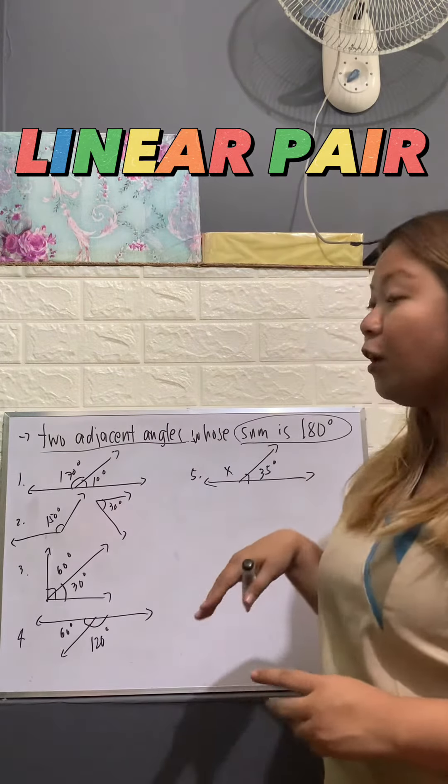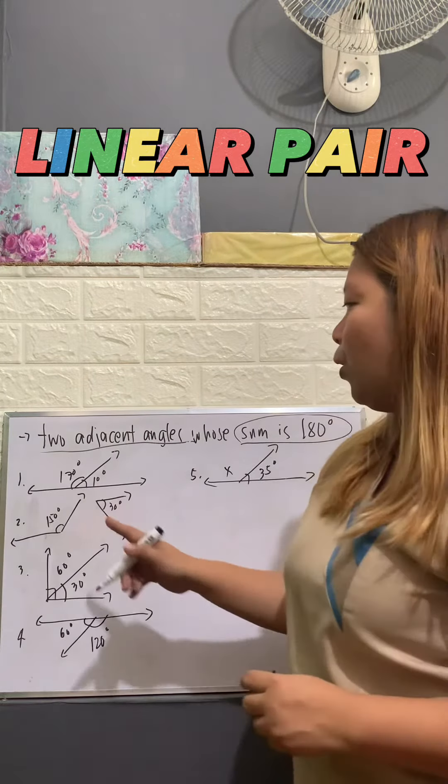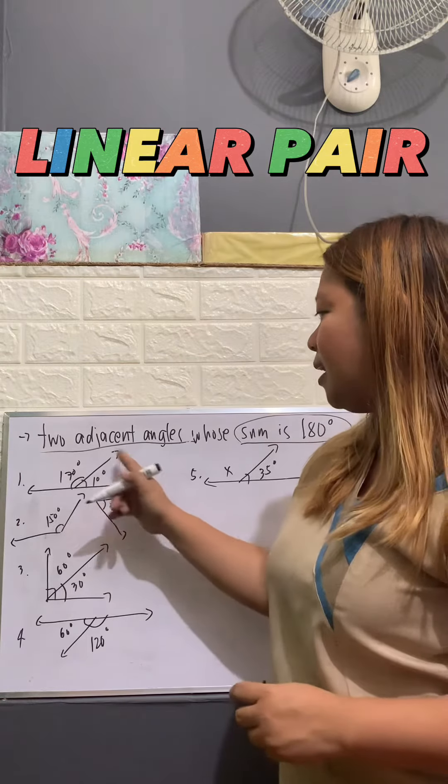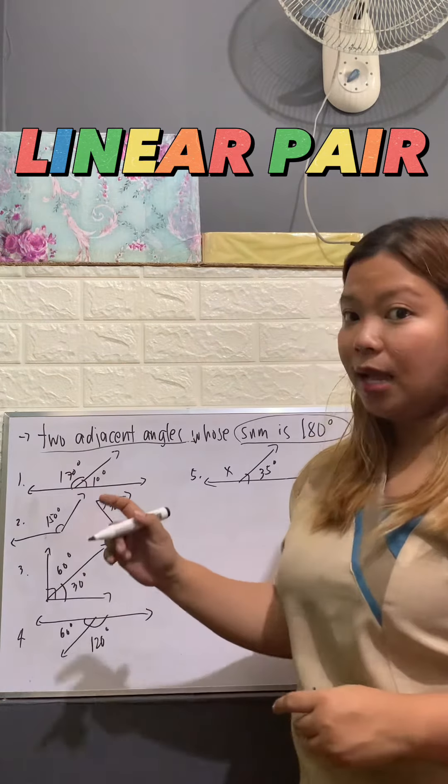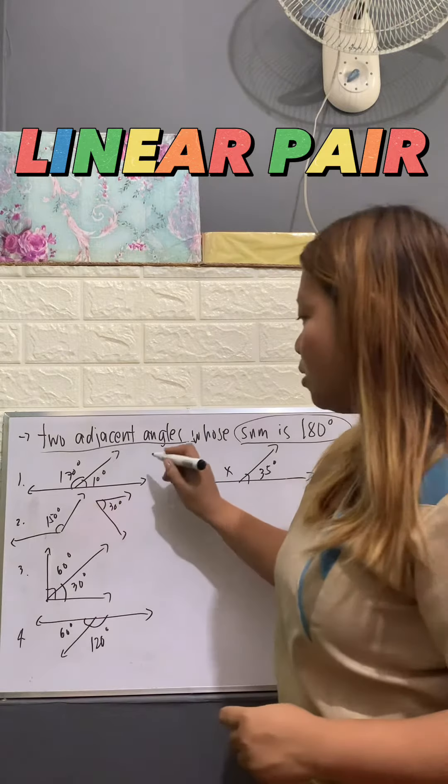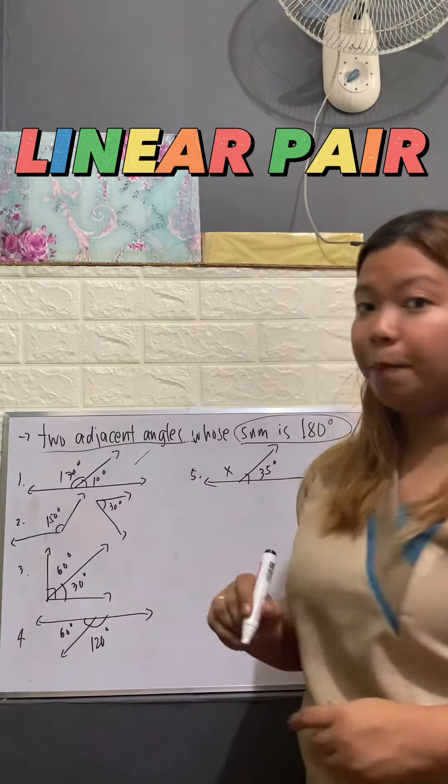Now, let's identify if the following are considered linear pair or not. We have two adjacent angles. If we add it 170 plus 10, that's 180. So, this one is considered linear pair.